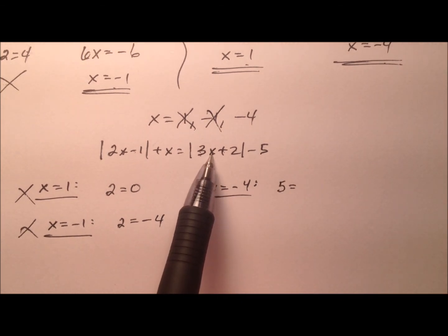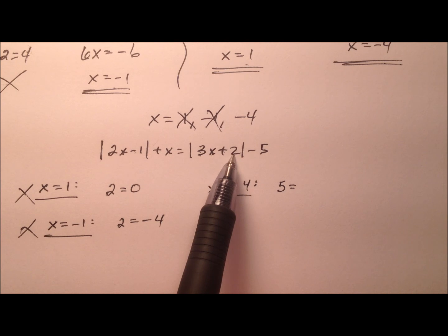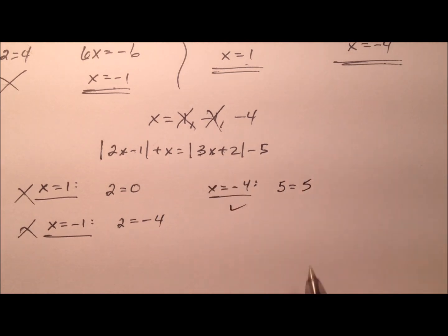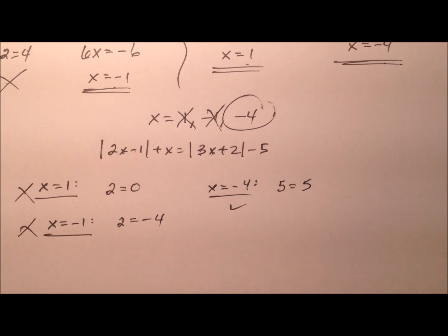And then 3 times negative 4 is negative 12. Plus 2 is negative 10. Absolute value is 10. 10 minus 5 is 5. So the negative 4 does work.